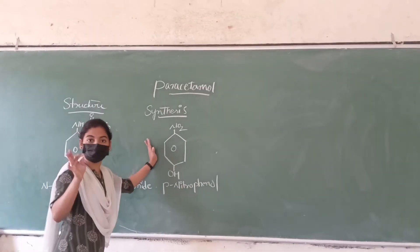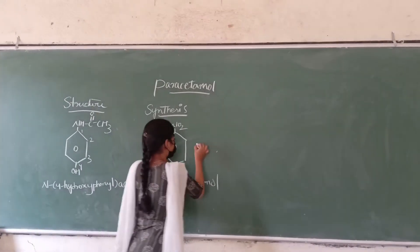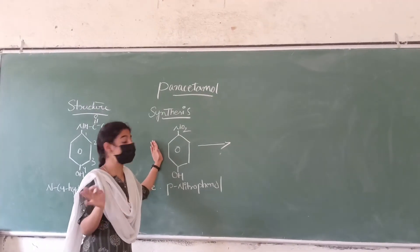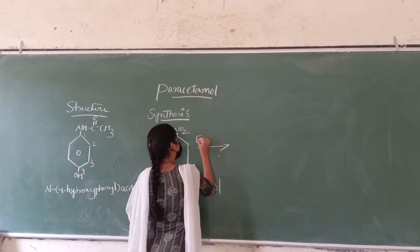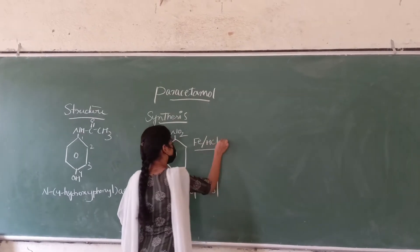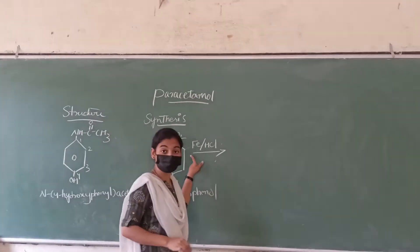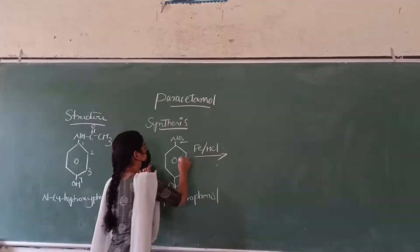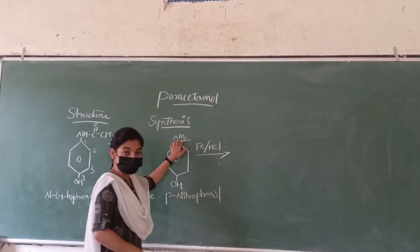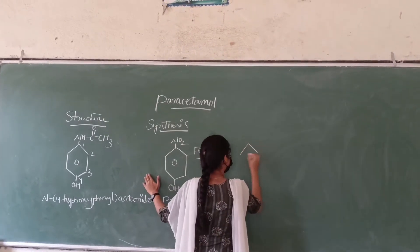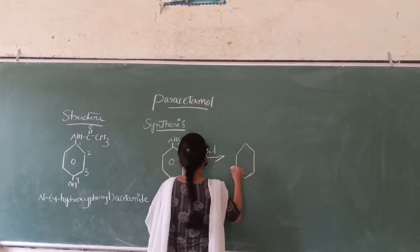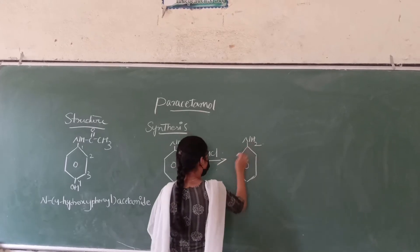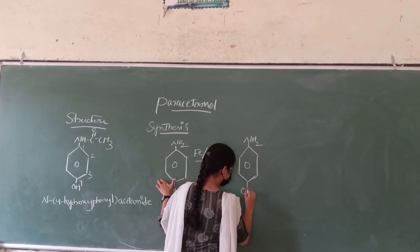This para-nitrophenol undergoes reduction. To reduce this compound, we have to treat it with a metal in the presence of an acid. I am taking iron (Fe) in the presence of an acid. Reduction is nothing but removal of oxygen. So the oxygen will be removed and addition of hydrogen takes place. That is, instead of the nitro (NO2) group, an amino group (NH2) will be formed, giving para-aminophenol with an OH group.